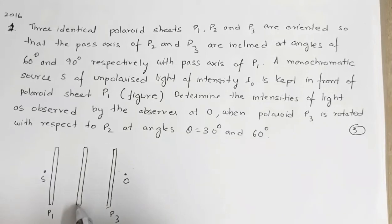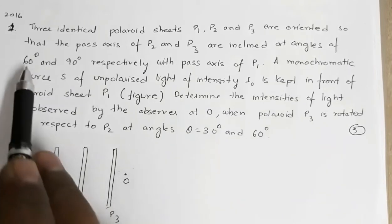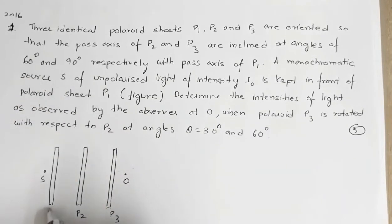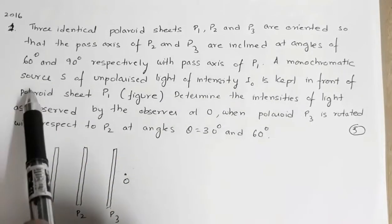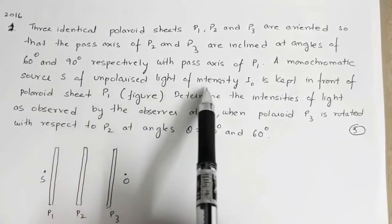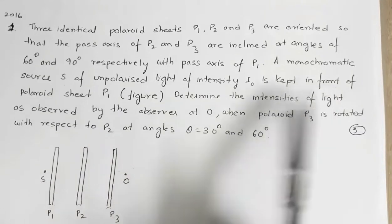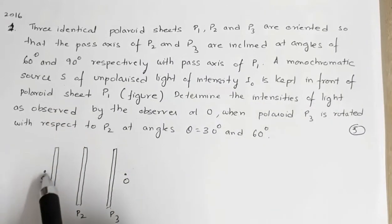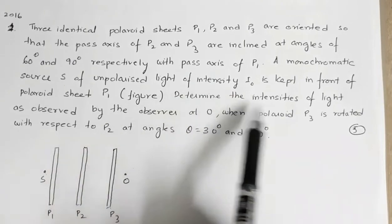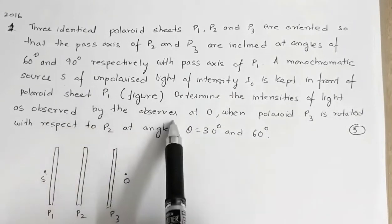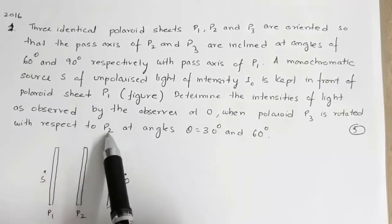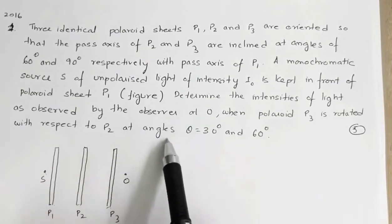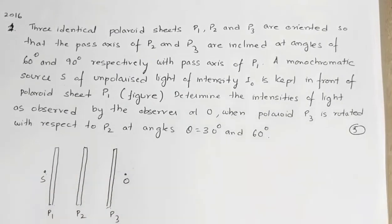The pass axis of P2 with respect to P1 is 60°, and the pass axis of P3 with respect to P1 is 90°. A monochromatic source of unpolarized light of intensity i0 is kept in front of polaroid P1. Determine the intensities of light as observed by an observer at O when polaroid P3 is rotated with respect to P2 at angles 30° and 60°.